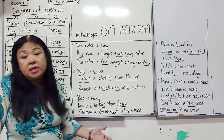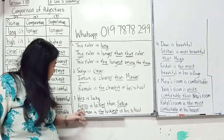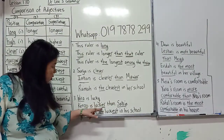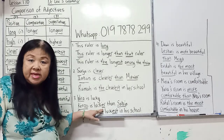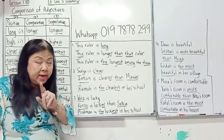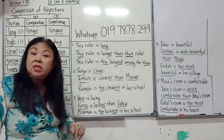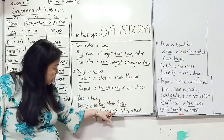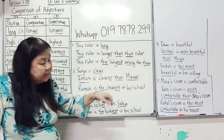Vira is lucky — no comparison, it's just himself. Kenzo is luckier than Satria — two persons, so lucky with Y changes to IER: luckier than. Remember, ER and IER — you put than. Budiman is the luckiest in his school — Y changes to IEST, and you put the in front.